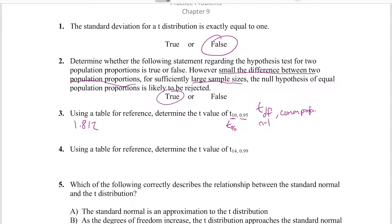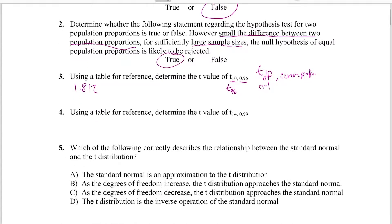Number four does the same thing, except we're just changing the degrees of freedom. Find your degrees of freedom, find the cumulative probability, then determine what t-critical value that corresponds to using the table. You find that to be 2.624.